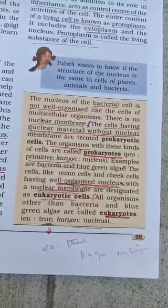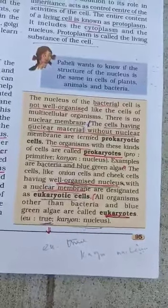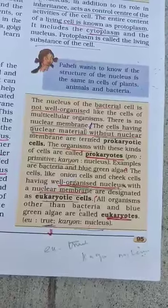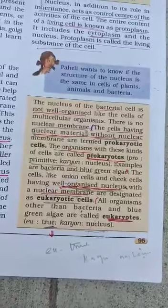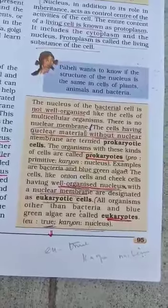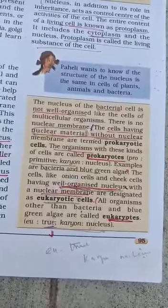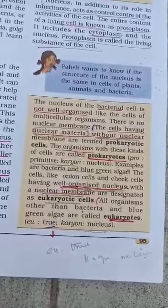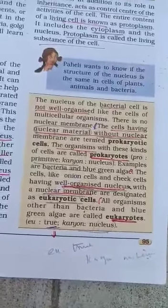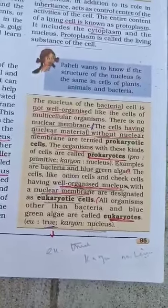Prokaryotic cells are cells that have nuclear material without nuclear membranes. Examples of prokaryotes are bacteria and blue-green algae.